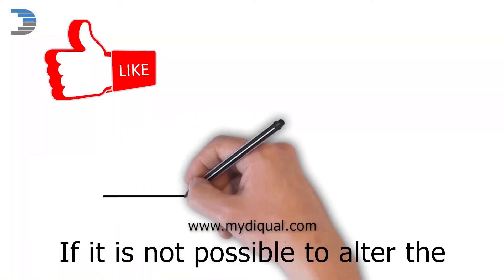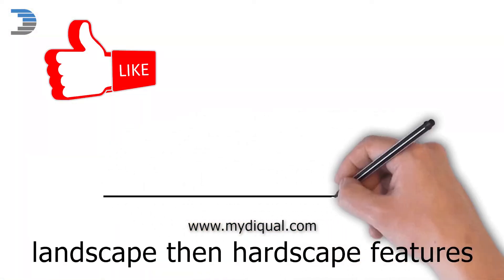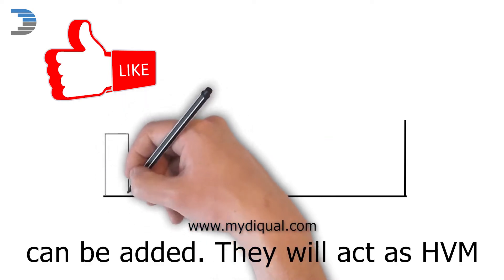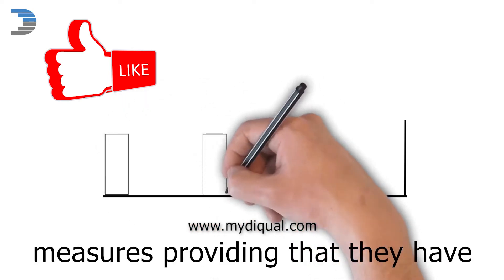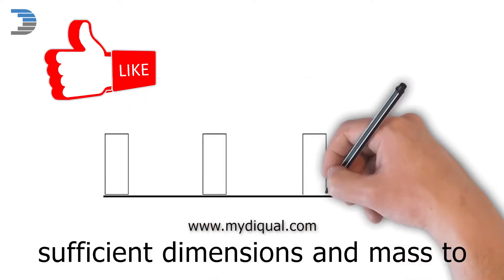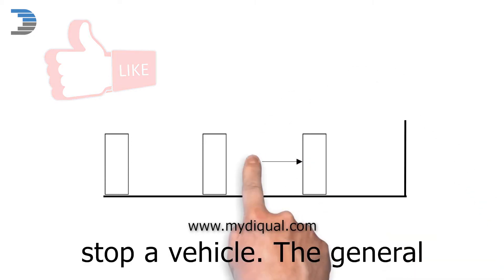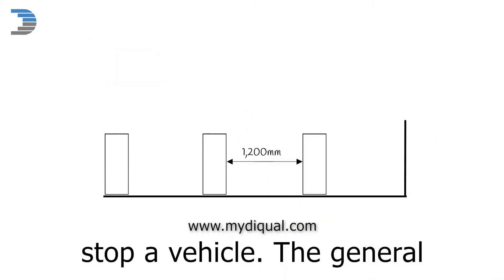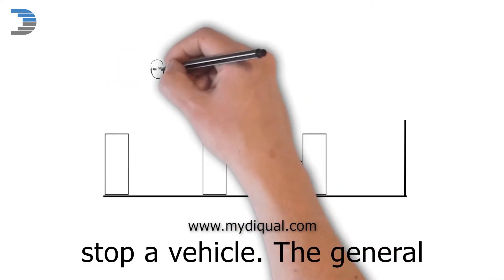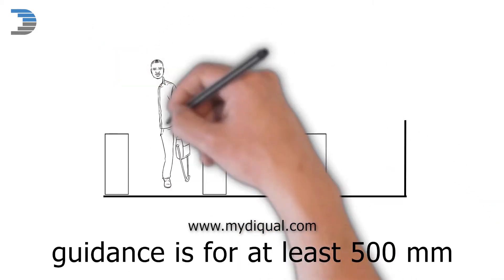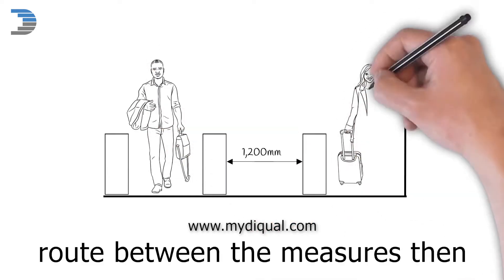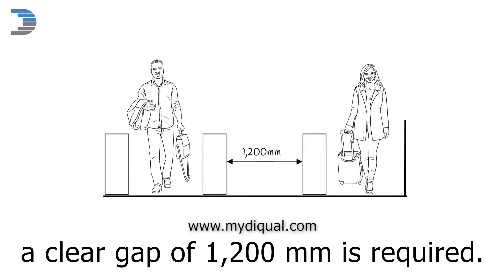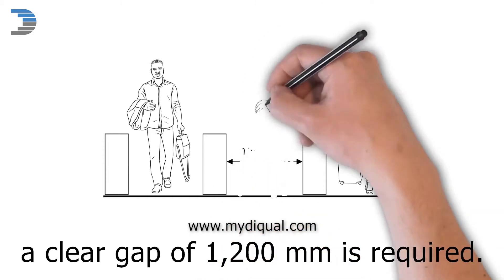If it is not possible to alter the landscape, then hardscape features can be added. They will act as HVM measures, providing that they have sufficient dimensions and mass to stop a vehicle. The general guidance is for at least 500 millimeters high, and if there is a pedestrian route between the measures, then a clear gap of 1,200 millimeters is required.